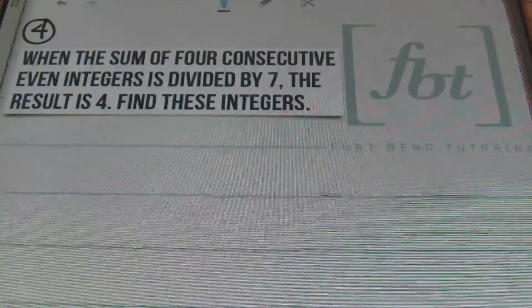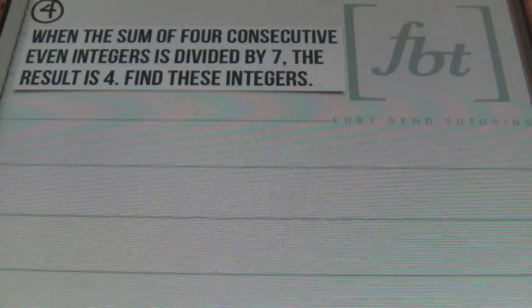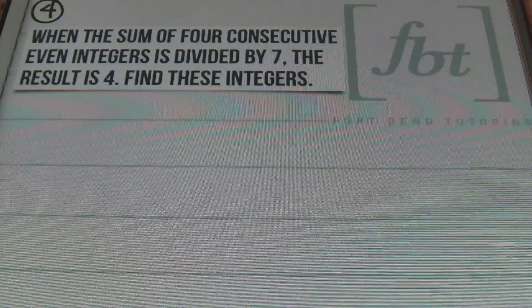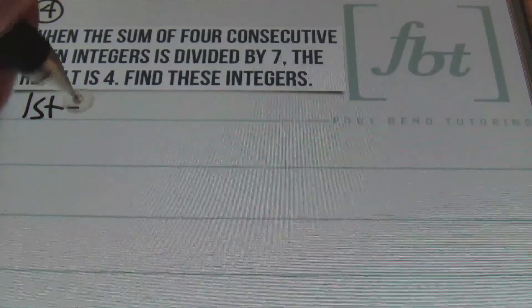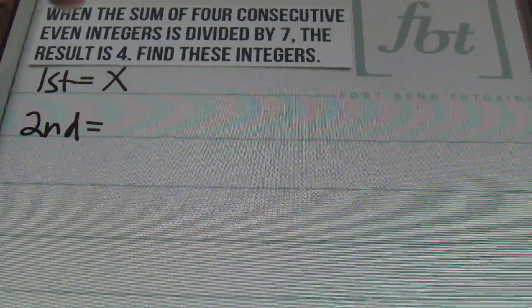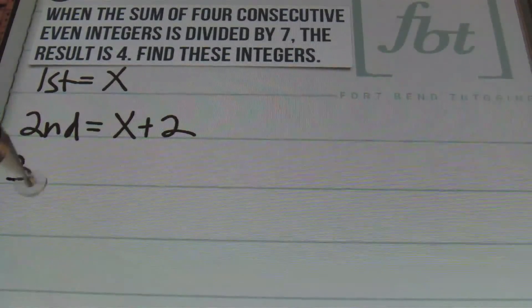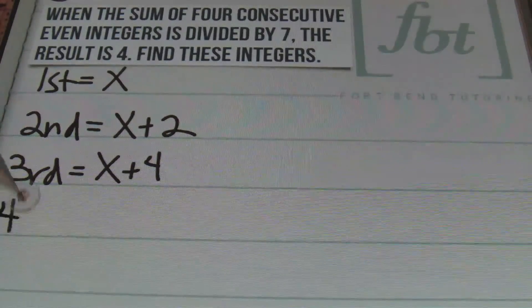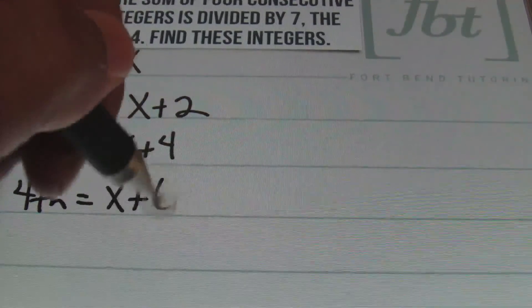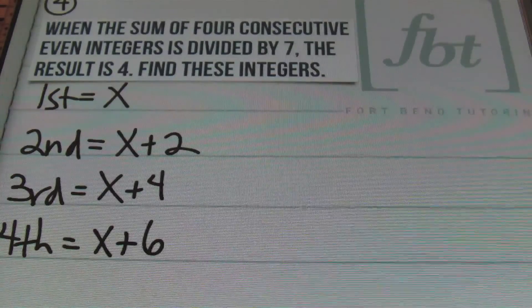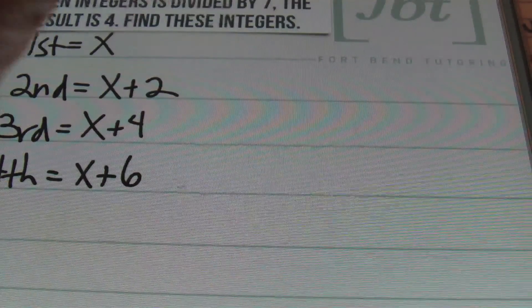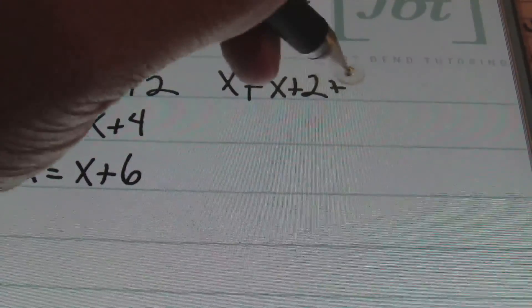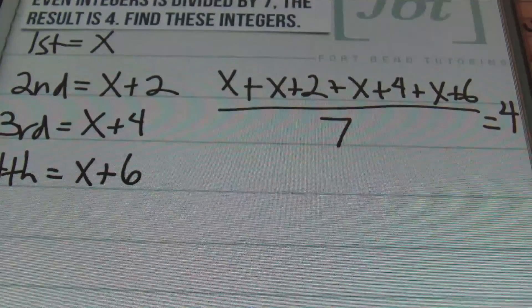Moving along — one last problem for this lesson. Problem number four reads: when the sum of four consecutive even integers is divided by seven, the result is four. Find these integers. We have four consecutive even integers, so the first is x, the second is x plus 2, the third is x plus 4, and the fourth is x plus 6. The equation is: (x plus x plus 2 plus x plus 4 plus x plus 6) divided by 7 equals 4.